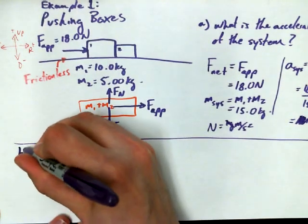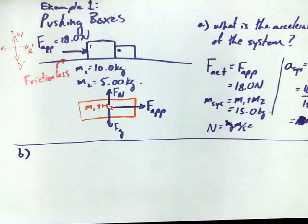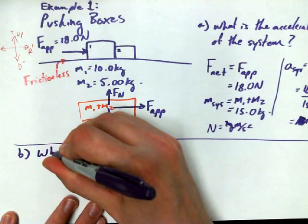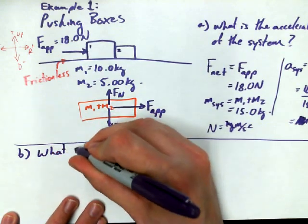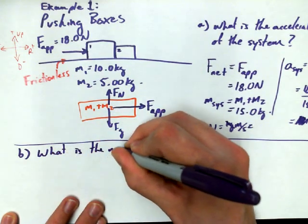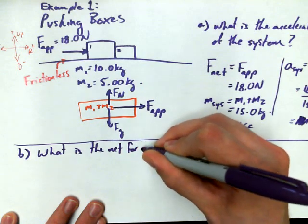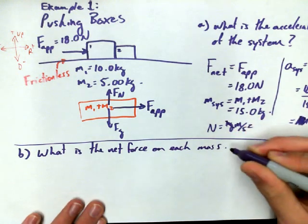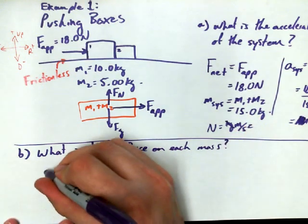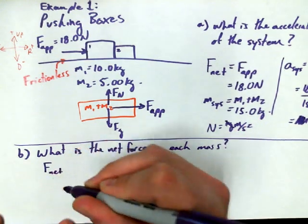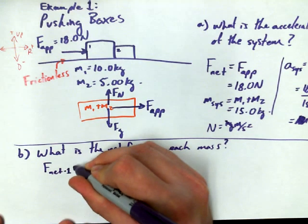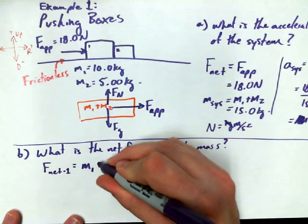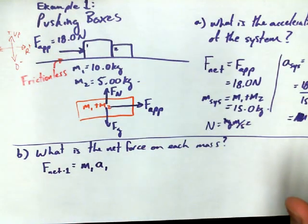So I might do a follow-up question. I might say, all right, so I know the acceleration of the system now. What I would like to know is what the net force is on each individual mass. So let's put that in writing. What is the net force on each mass? And as everybody knows, F_net for a particular mass, let's say F_net for mass 1, is equal to, as Alex said just a second ago, that object's mass times that object's acceleration. F equals ma.